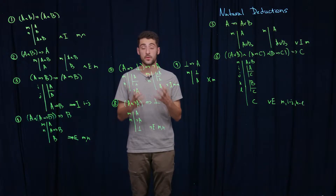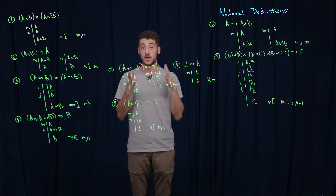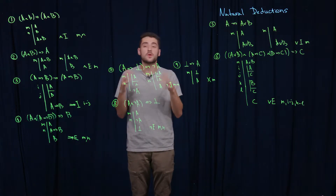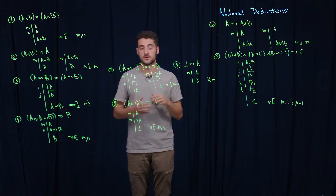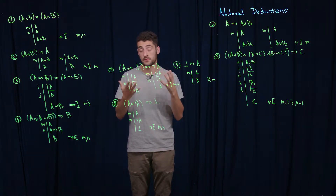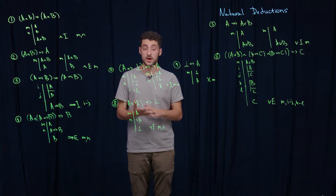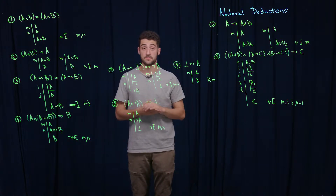Let's specify what specific rules we are going to use in natural deduction, because we cannot say we can use any tautology — there are way too many of them. And actually, it's enough to have only nine of them.